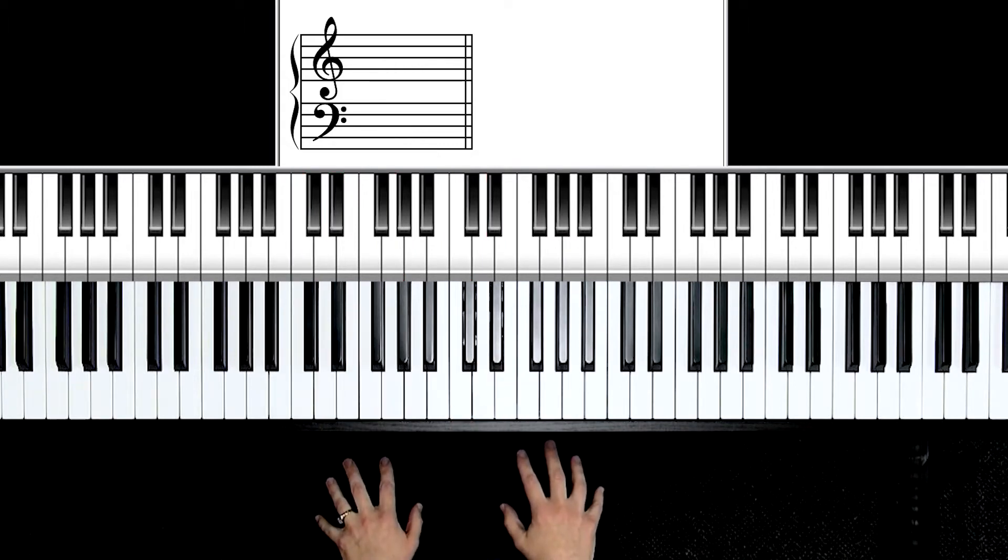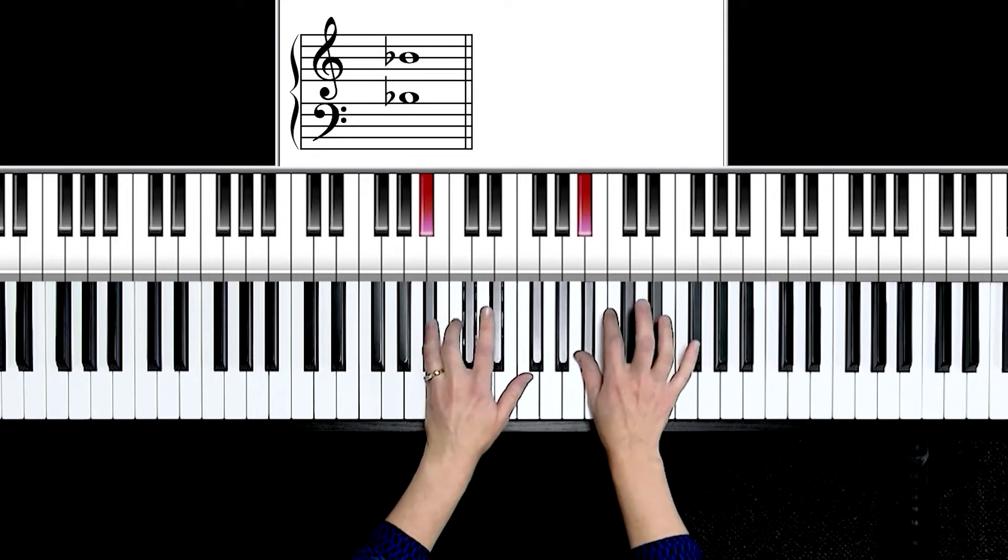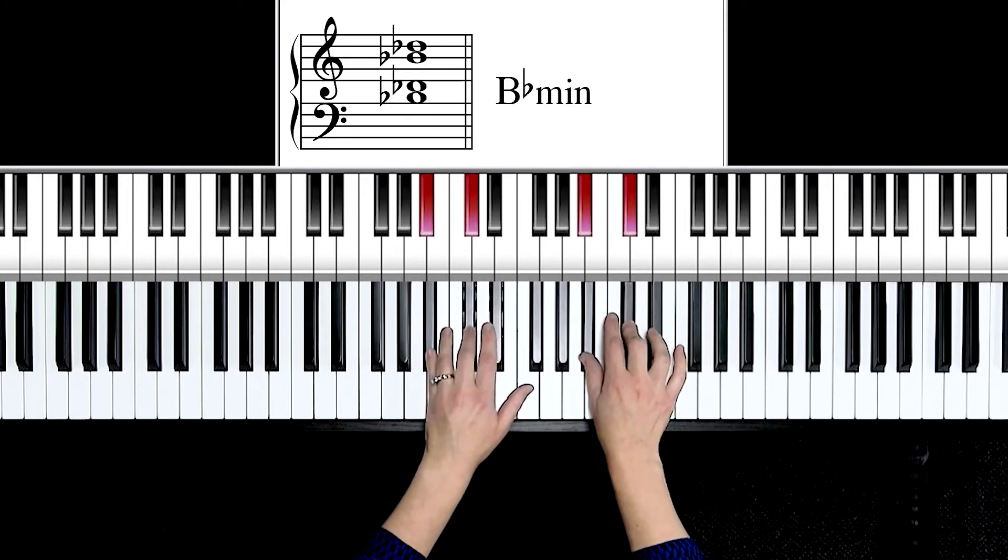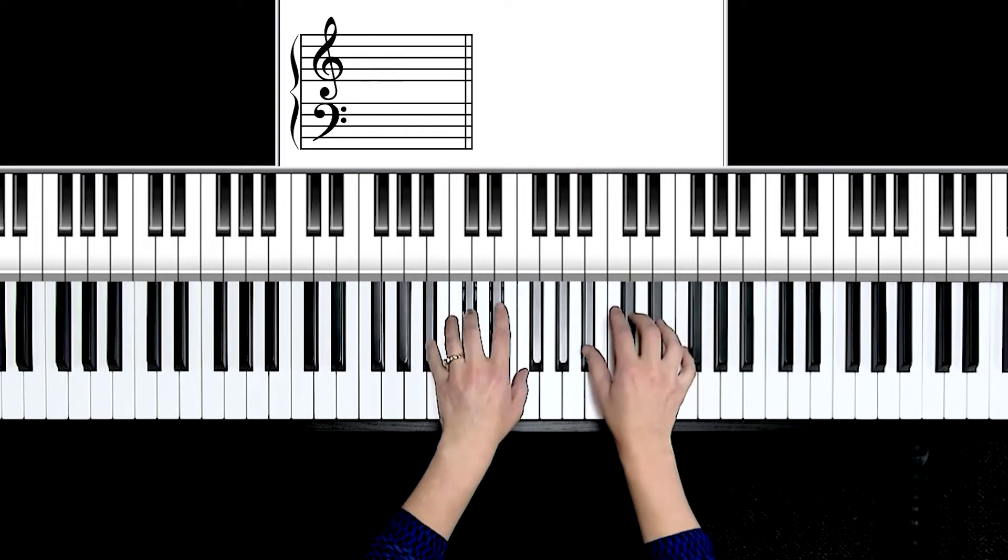Let's apply this to the key of B flat minor. Start with B flat. Count up three half steps, one, two, three. I have D flat. Up four half steps, one, two, three, four. I have B flat, D flat, F, or B flat minor.